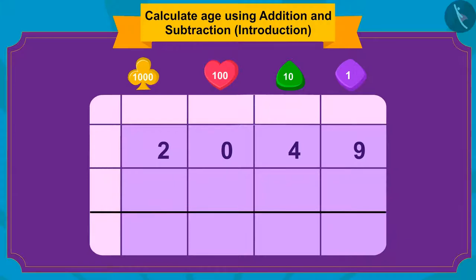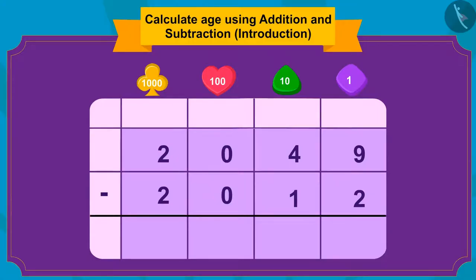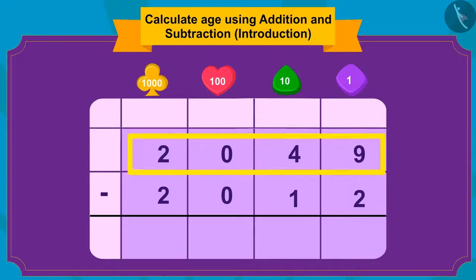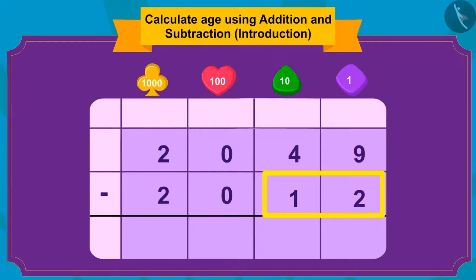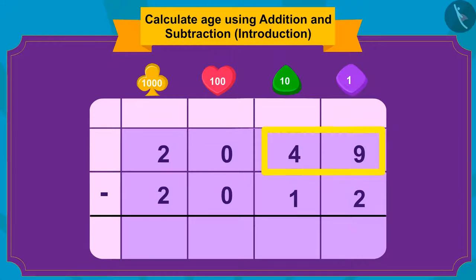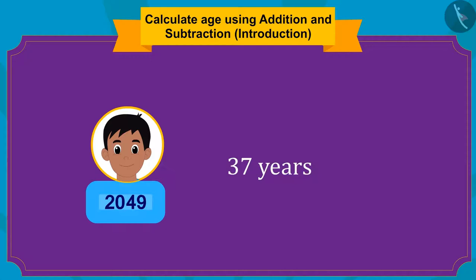And in which year was Raju born? 2012. So, what do we have to do now? Yes, we have to subtract 2012 from 2049. Children, do you know the process of doing this subtraction quickly? Since in 2049 and 2012, the thousands and hundreds digits — 2 and 0 — are exactly the same, we can do this subtraction by subtracting 12 from 49. What will we get if we subtract 12 from 49? Absolutely right — 37! So, Raju's age in the year 2049 is 37 years.